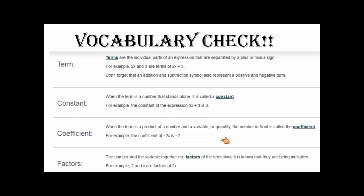Coefficient is the number in front of the variable that's being multiplied. So in this example here of negative 2x, this means negative 2 times x, then negative 2 is your coefficient. Notice it's always the number that's being multiplied, the product.